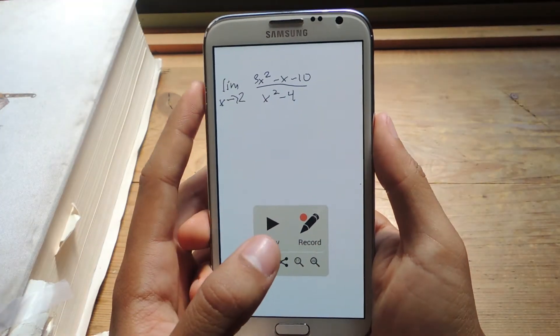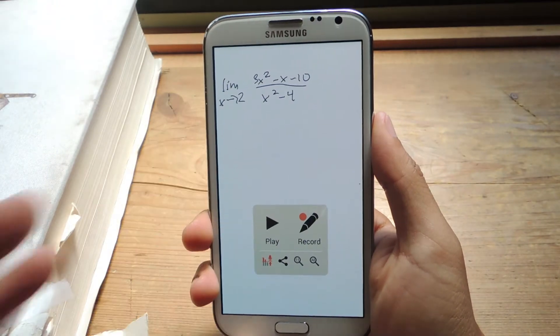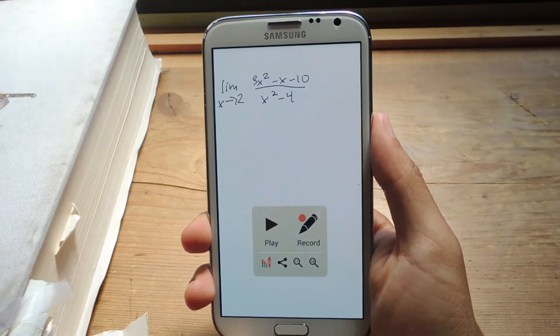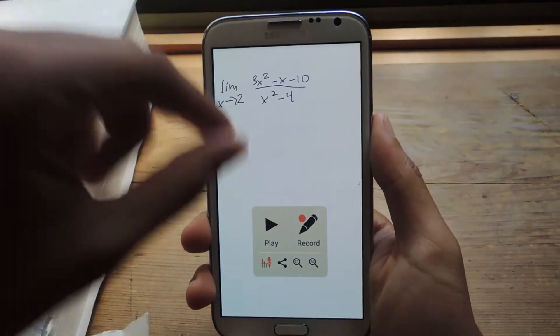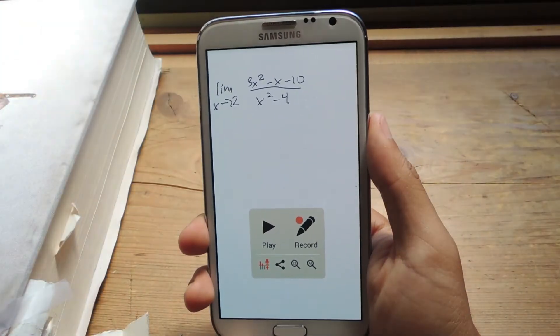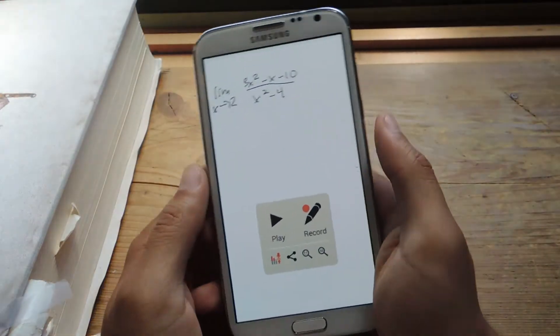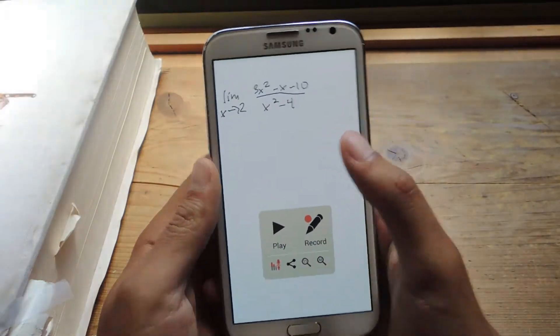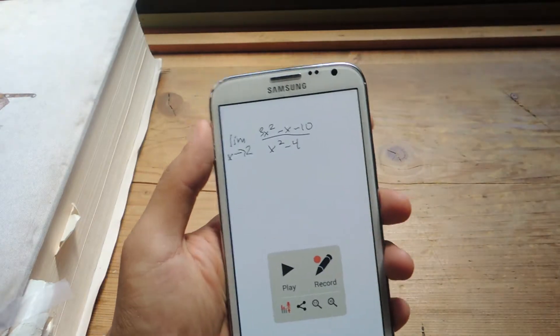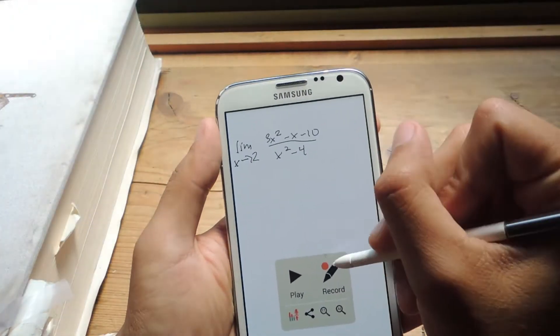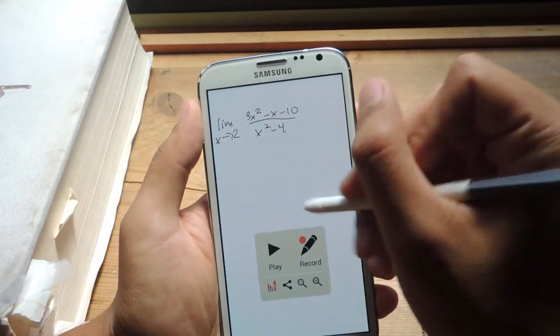The video will begin recording when you start talking. As you keep talking, the video will continue recording. Whenever you stop talking, the video will take a pause, or you can continue drawing, but the video only records when you're talking. So I'm going to show you guys. I'm going to solve this problem here with my stylus. Now I'm going to tap on record and begin.